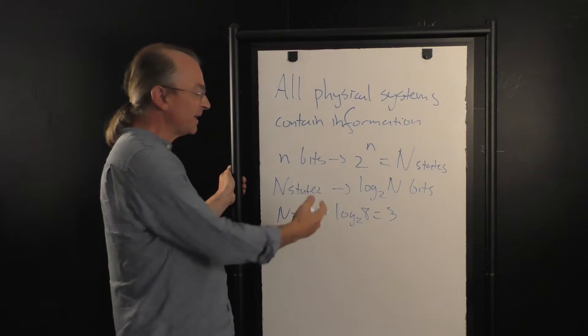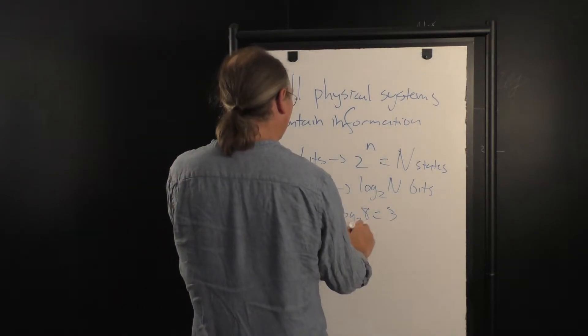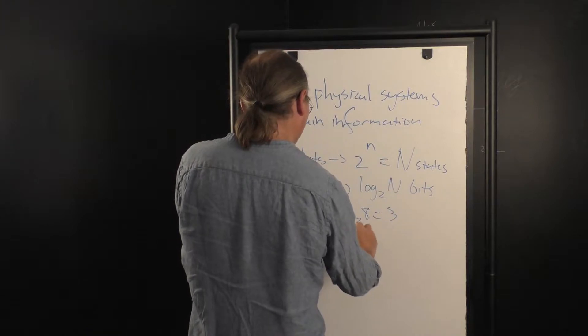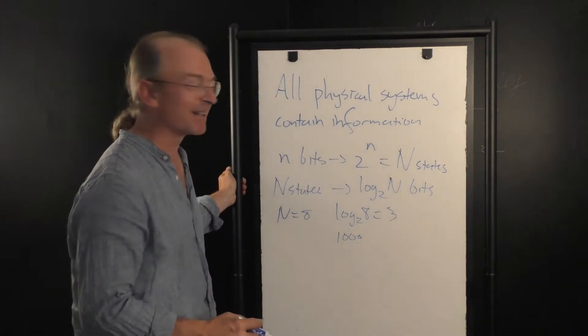It's the number of bits I need to write out 8, because 8 is equal to 1, 0, 0, 0. Well, actually, it's the number of zeros in the bits that I need to write it down.